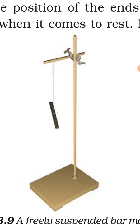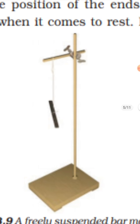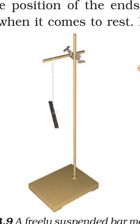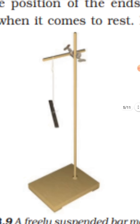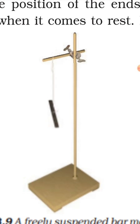You have to mark two points on the ground to show the position of the ends of the magnet when it comes to rest. Then draw a line joining the two points. This line shows the direction in which the magnet was pointing in its position of rest.